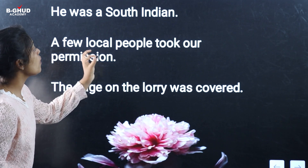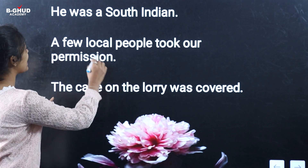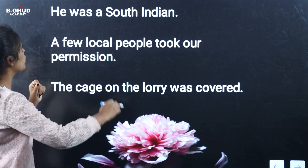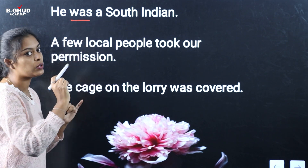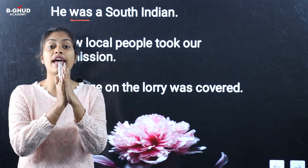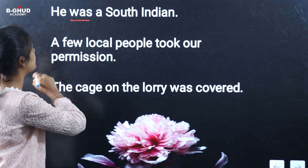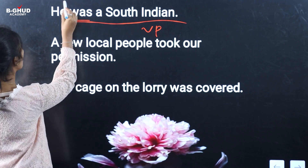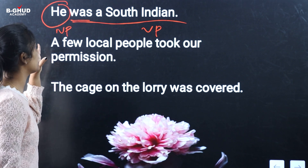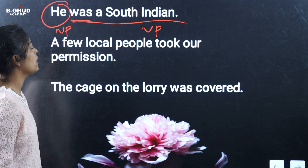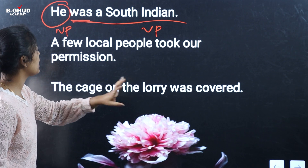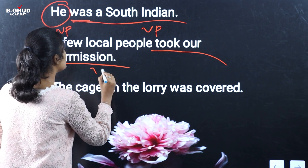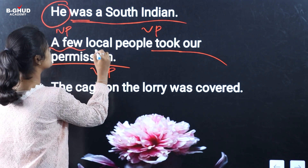Third example: 'He was a South Indian.' Can you identify the verb? In this sentence, 'was' is the verb — it is an auxiliary verb here. Now: 'A few local people took our permission.' There is no auxiliary verb. 'Took' is the main verb, so 'took our permission' is the verb phrase. 'A few local people' is the noun phrase.